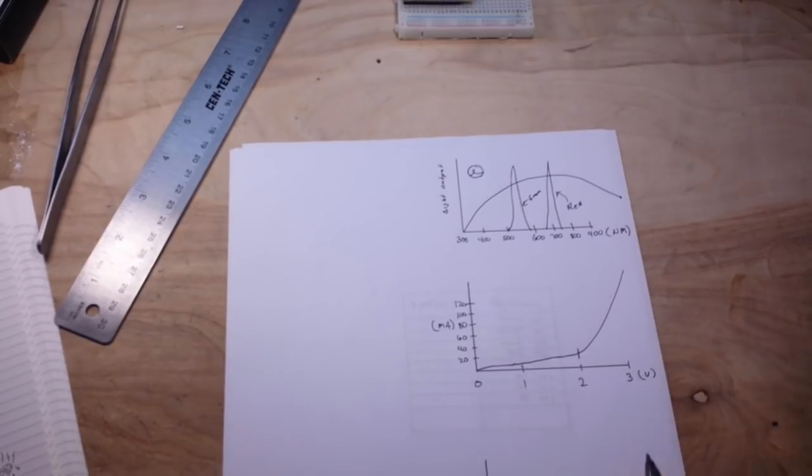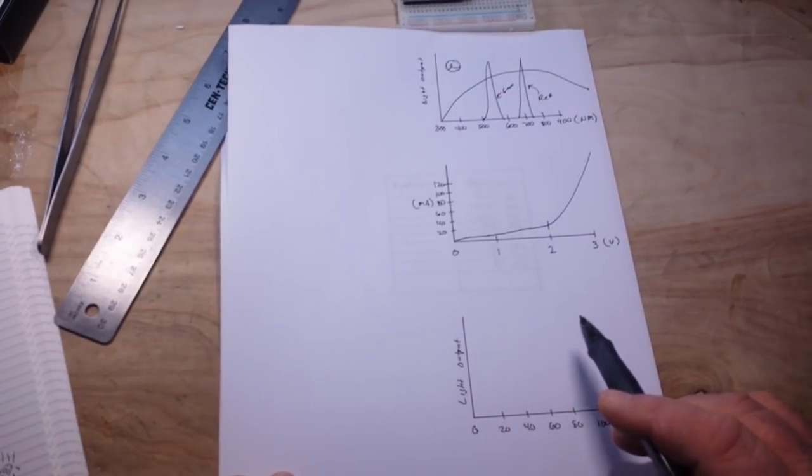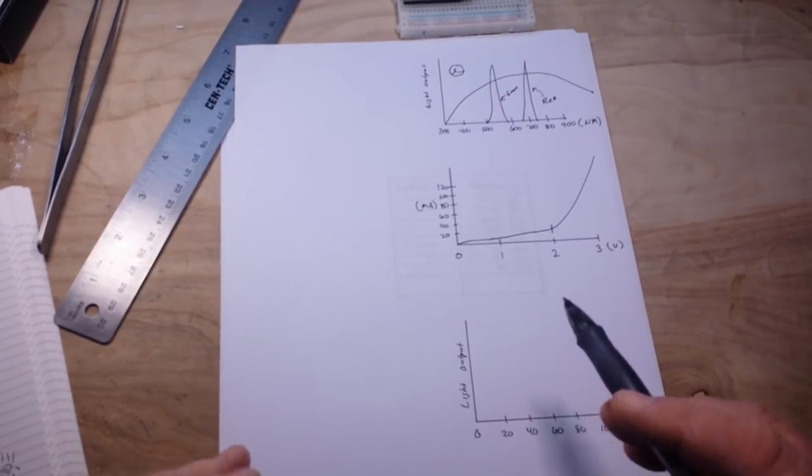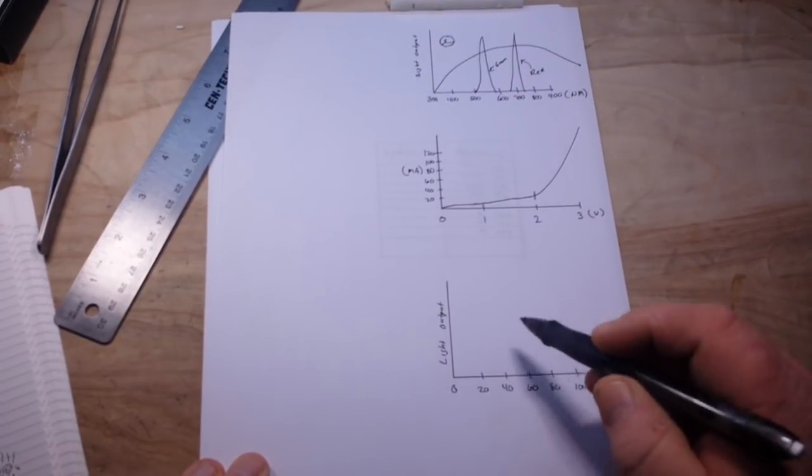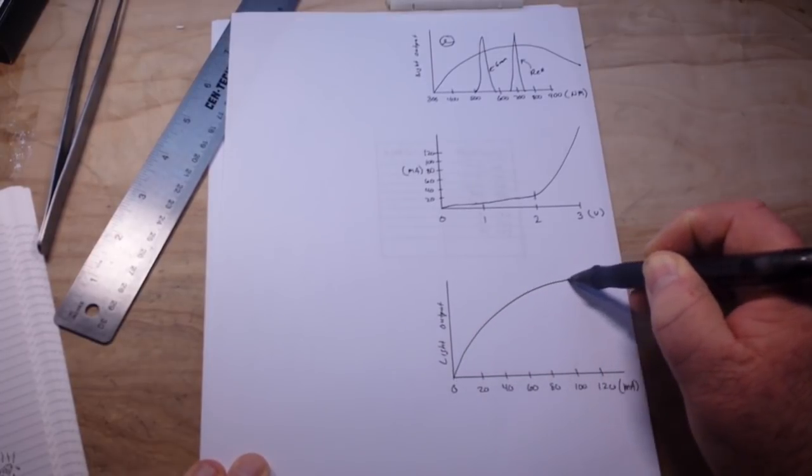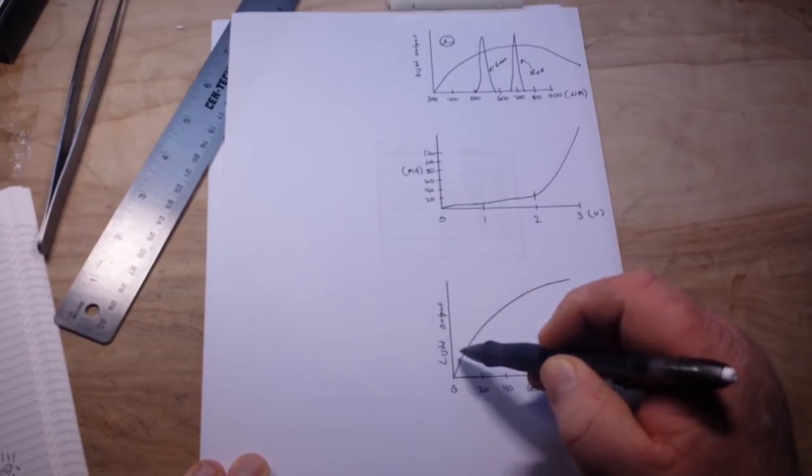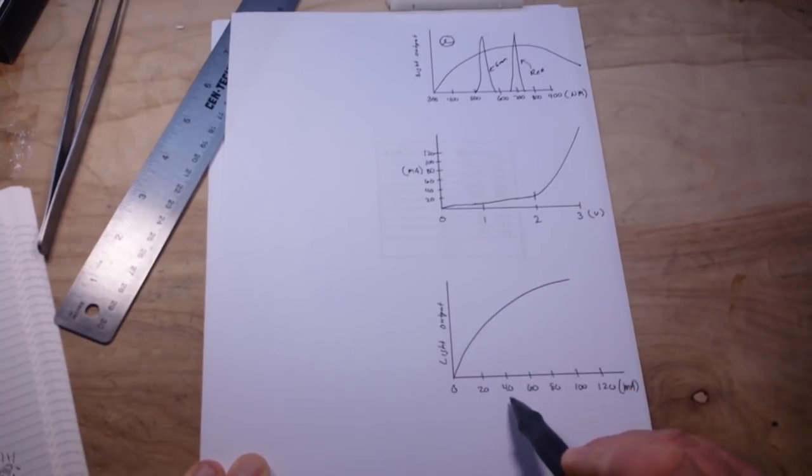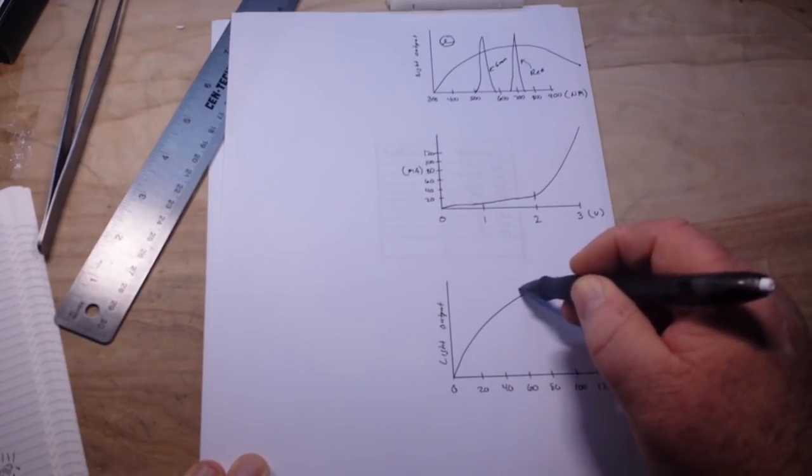Now, the next thing that we need to talk about, again, is light output. And in this case, the light emitted by an LED is directly proportional to the current through the LED. So then we get a curve something like this. This is our level of light output. This is the milliamps putting through it.